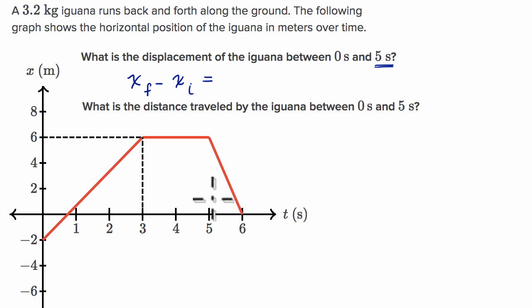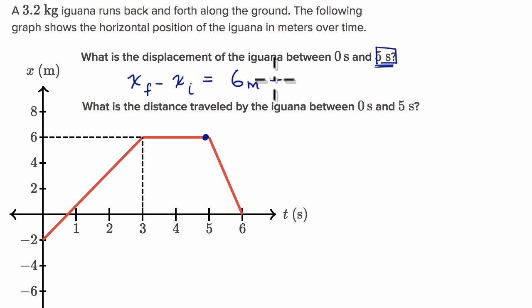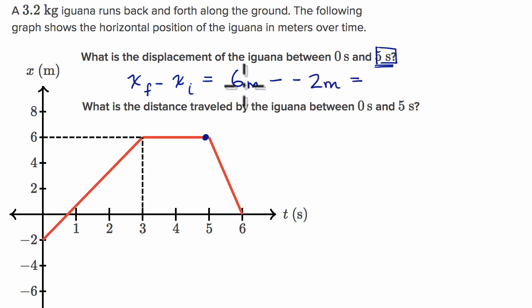What is your final position? We're not talking about the last time on the graph — our final is going to be at five seconds. So our final position is positive six meters. And from that, you're going to subtract our initial position, which was at negative two meters. So this is going to be equal to six minus negative two, which is positive eight meters.